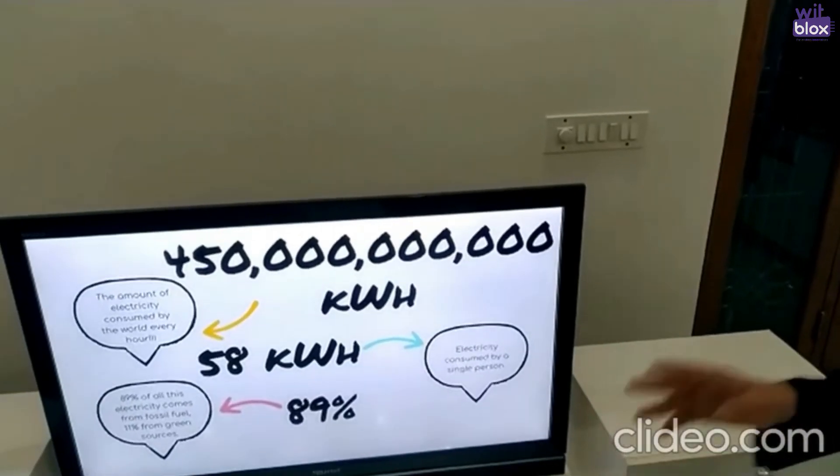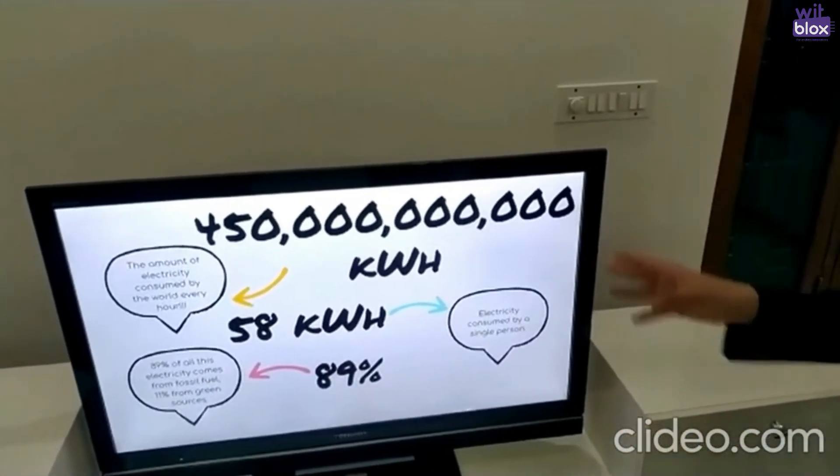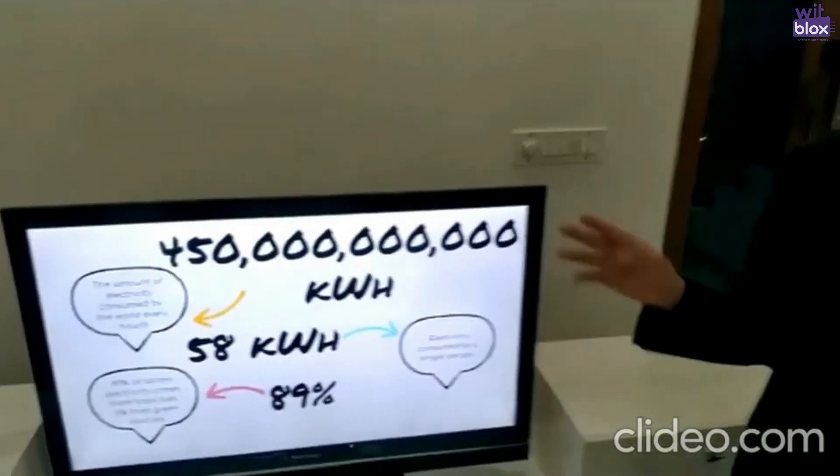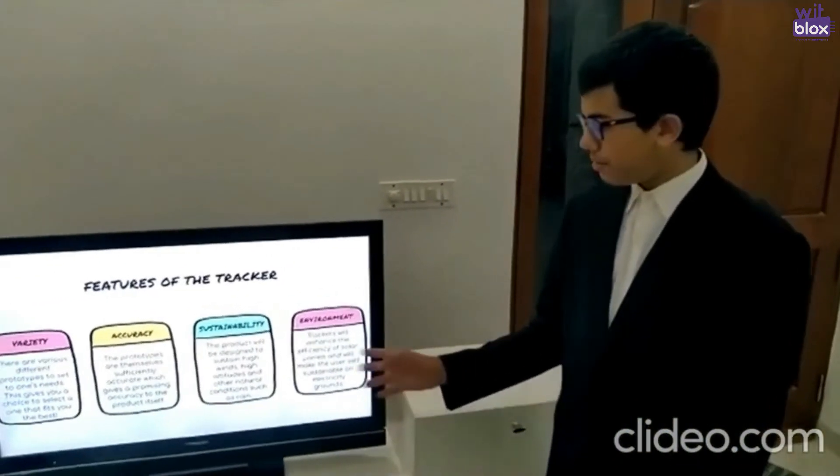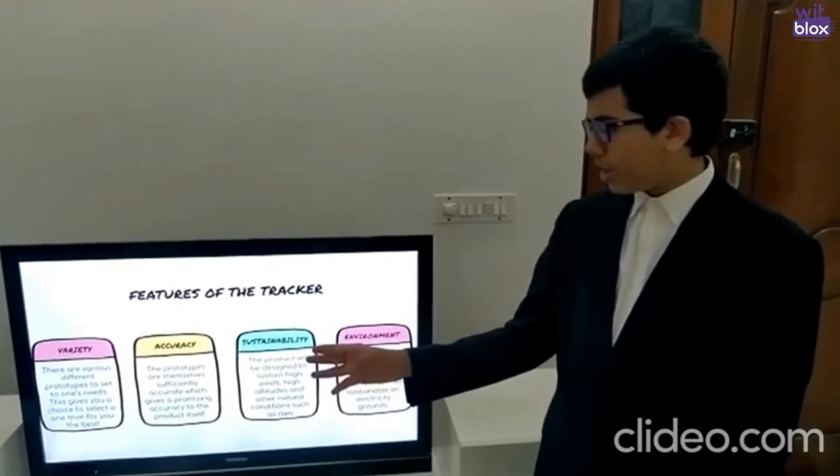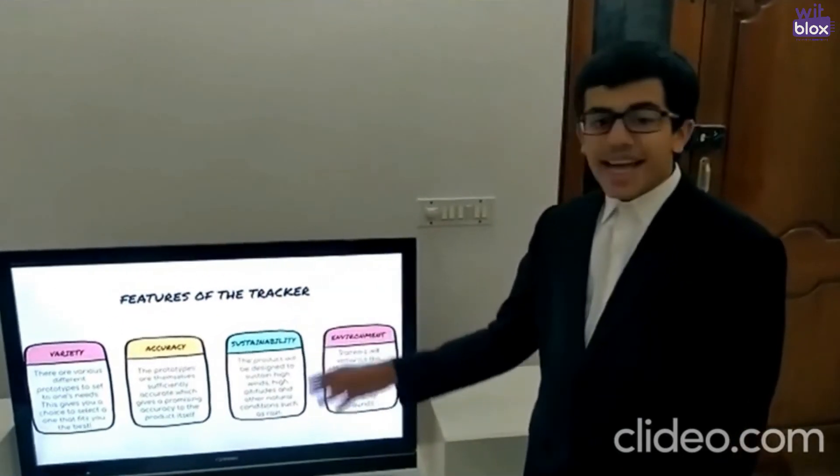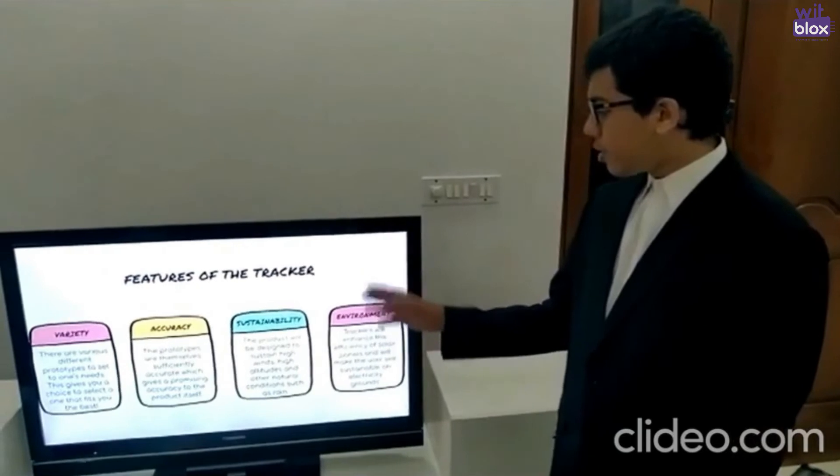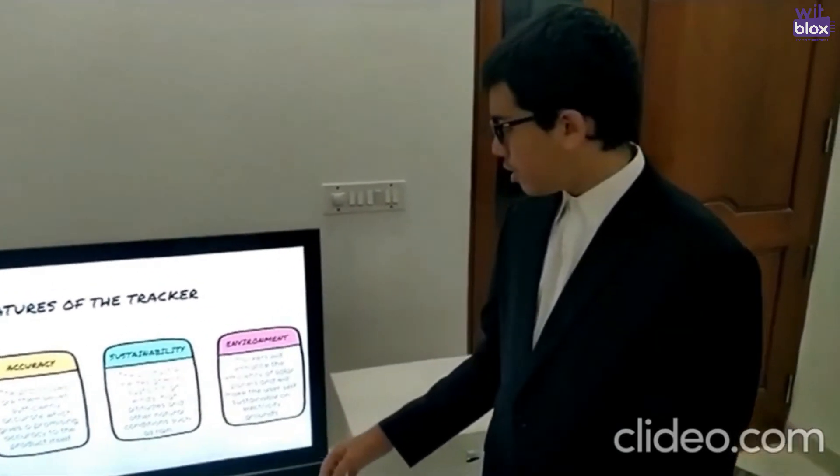The amount of electricity consumed by the world every hour is a whopping 450 billion kilowatts. The sad part is 89% of all this energy comes from fossil fuels. Features of the tracker: There are a variety of prototypes. This allows the user to choose the one that fits him best. It is accurate. It is made to sustain high winds, high altitudes and other natural conditions. And overall, it is environment friendly.